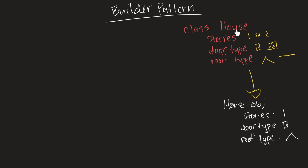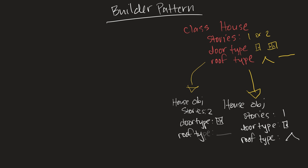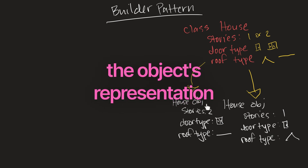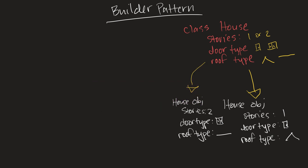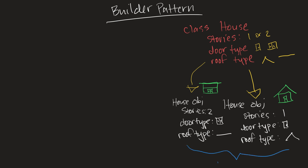This is just one possible variation of a house. We can imagine creating another instance — also a house object — but this one has stories two, door type double, and roof type flat. So both of these are house objects, but they're two different representations of the house class: a one-story house with a single door and a pointy roof, and a two-story house with a double door and a flat roof. Their fields have different values, resulting in two different types of house — each is a representation of a house.